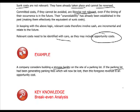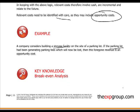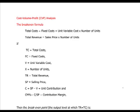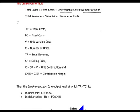Another area of short-term decision-making covered in the syllabus is break-even analysis, which is based on cost-volume-profit analysis. Total costs are built up by fixed costs and variable costs — that is, unit variable cost multiplied by the number of units produced. Total revenue is the selling price multiplied by the same number of units produced or sold. So: total costs, fixed costs, unit variable costs, and number of units on one side; total revenues on the other.